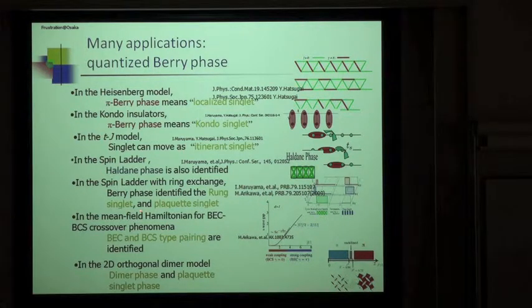In addition to the singlet phase, we identified the pocket singlet phase in the spin-ladder with the ring exchange. Also the mean field Hamiltonian for the BEC-BCS crossover phenomena. We identified the BCS and BEC type pairing. In the two-dimensional orthogonal dimer model, such as Shastri-Sutherland model, dimer phase and the pocket singlet phase are identified.